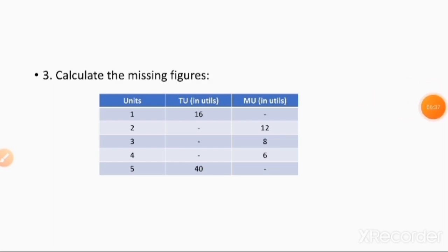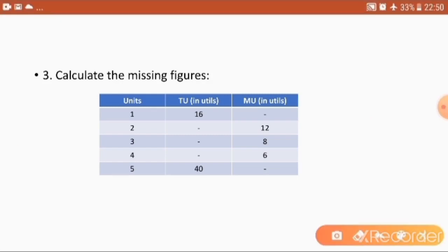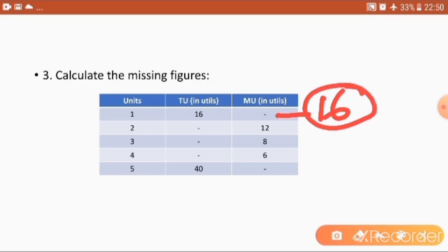Now let's go to the third problem. Here both total utility and marginal utility are given, but some values are missing. We have to find out the missing figures for total utility as well as marginal utility. For the first unit, the marginal utility will be 16 only — the same as the total utility. Now we add 16 and 12 to get 28, which is the total utility for the second unit.